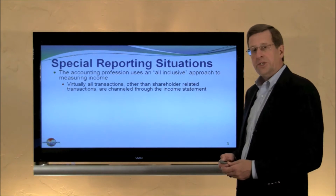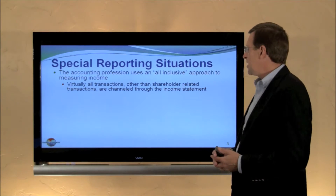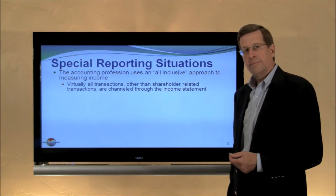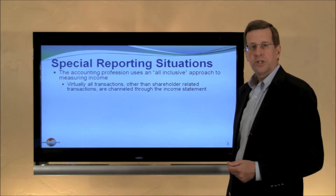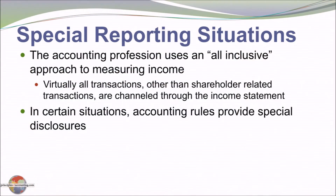The accounting profession uses an all-inclusive approach to measuring income. In other words, virtually all transactions and events other than shareholder-related transactions are channeled through the income statement. We don't decide that a loss can be charged or credited directly to retained earnings — it needs to be reflected in the income statement. In certain situations, though, special disclosures are appropriate for events beyond mainstream operations. We'll look at error corrections, discontinued operations, other comprehensive income, and changes in accounting methods.